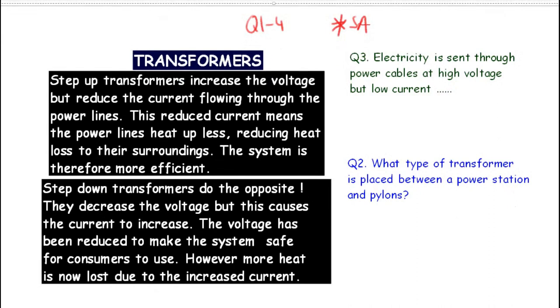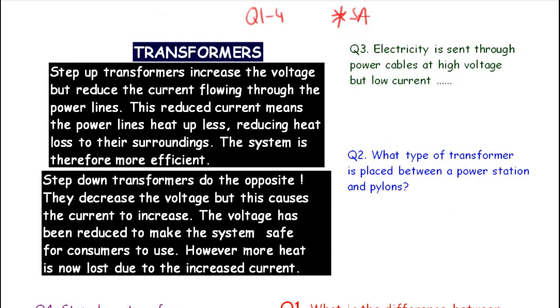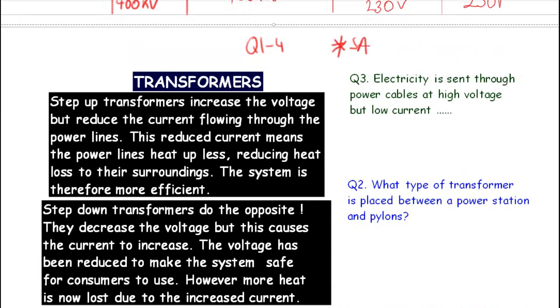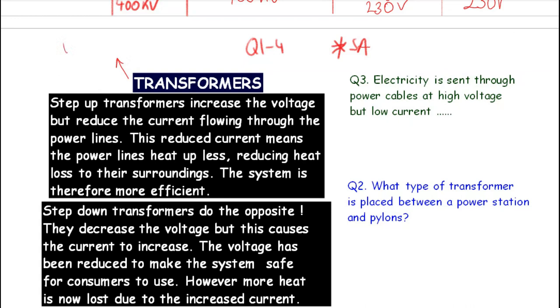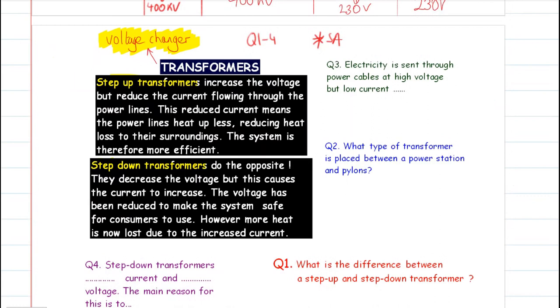On the next page, there's some more information about these transformers, the two different types. All you've got to know really, that a transformer is known as, or can be thought of as, a voltage changer. They are not robots in disguise, they are voltage changers. They change the voltage from one level to another. The step-up variety increases, and the step-down transformer decreases the voltage. Please read those two paragraphs and answer questions one to four below. When completed, press play.